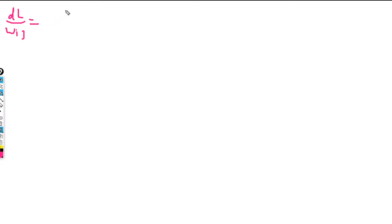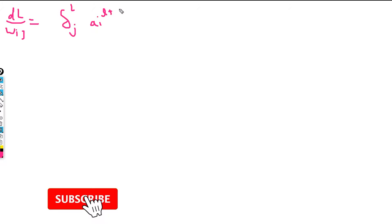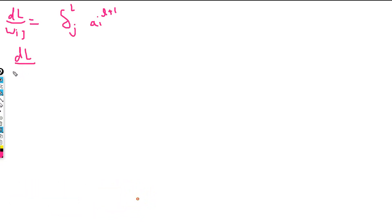In this video, what we are going to see is how we are going to find the gradient for the hidden layers. Let's see what we derived previously: dL/dw_ij is going to be delta_j(l) times a_i(l+1), and for dL/db_j(l) it is going to be delta_j(n).